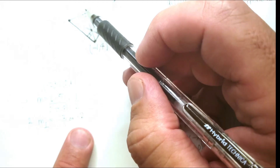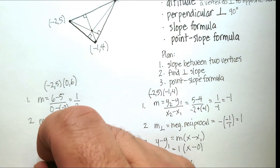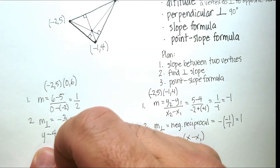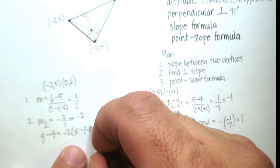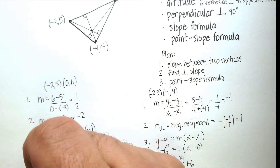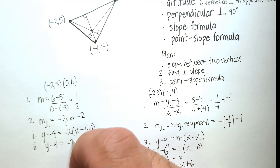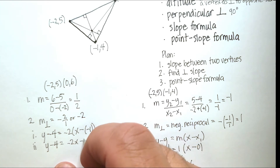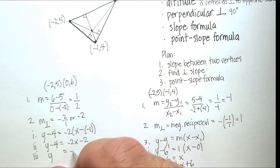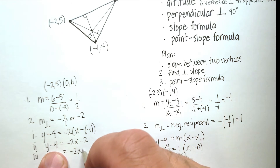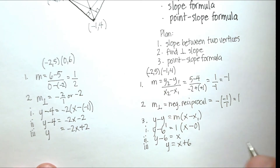Using the perpendicular slope −2 and the opposite vertex (−1, 4), we apply the point-slope formula: y − 4 = −2(x − (−1)). Distributing: y − 4 = −2x − 2 + (−2·(−1) = +... wait: −2x + (−2)(−1) = −2x + (−2) — actually distributing: y − 4 = −2x − 2. Adding 4 to both sides: y = −2x + 2.